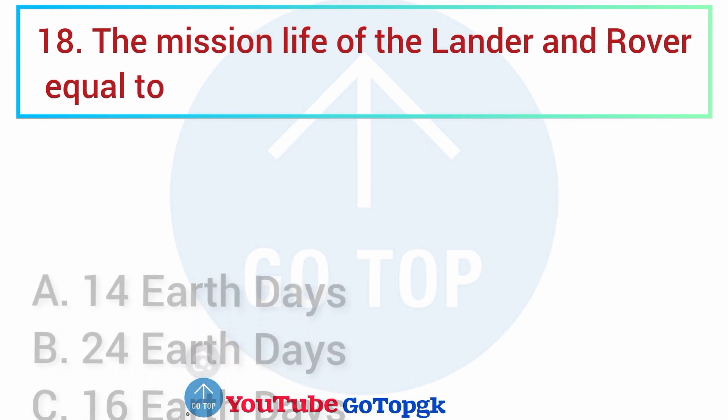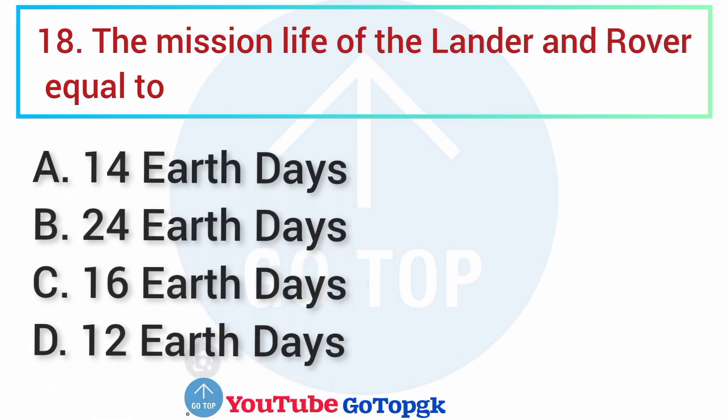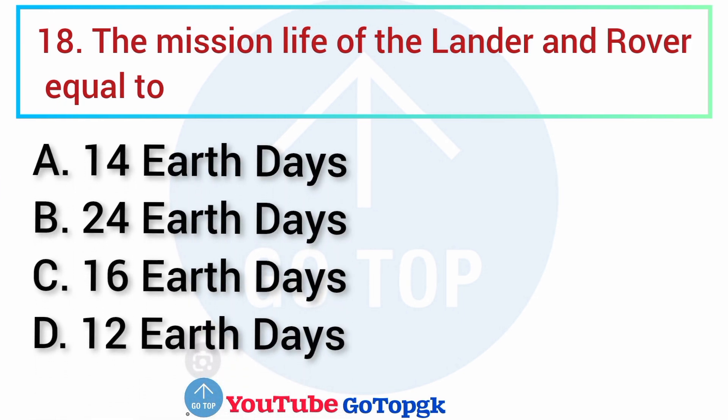Question No. 18. The mission life of the lander and rover is equal to: Options: A. 14 Earth days, B. 24 Earth days, C. 16 Earth days, D. 12 Earth days. Your correct answer is option A: 14 Earth days.